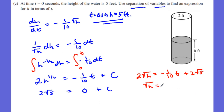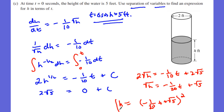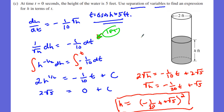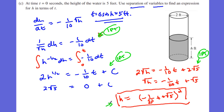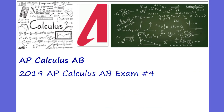Dividing both sides by 2 gives √h = -1/20 t + √5, then squaring both sides yields h(t) = (-1/20 t + √5)². Part C is worth four points: one for separating variables, one for taking the antiderivative, one for finding the constant of integration, and one for the final function. In total: A is 2 points, B is 3 points, C is 4 points — nine points overall. Grade yourself and check MrAiden.com. This was AP Calculus 2019 AB Exam number four.